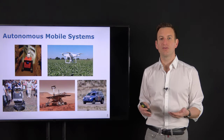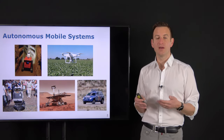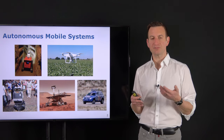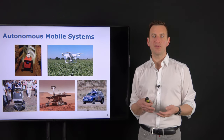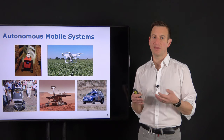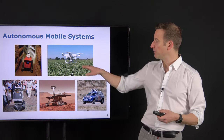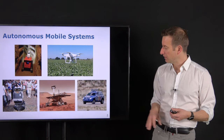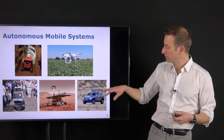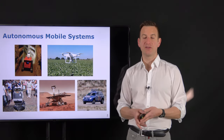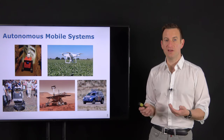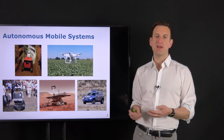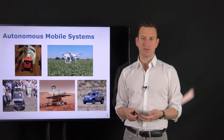The same holds for drones or autonomous cars. These are systems which can control their steering and velocities to move through the environment, equipped with sensors such as cameras on board the drone, or laser range scanners, cameras, radars, and other sensors on more sophisticated vehicles like autonomous cars. There is a wide range of different robotic systems.